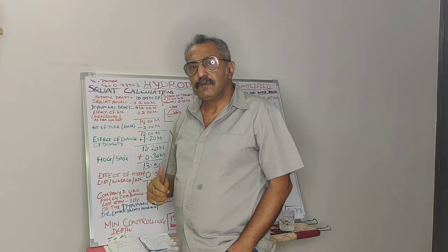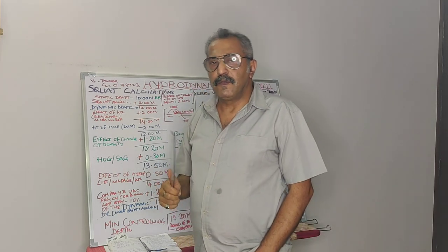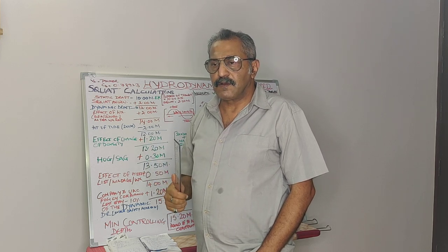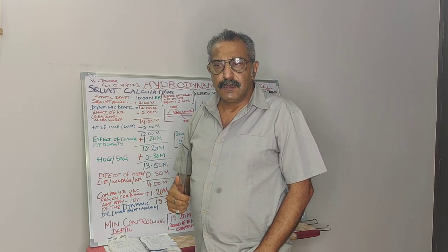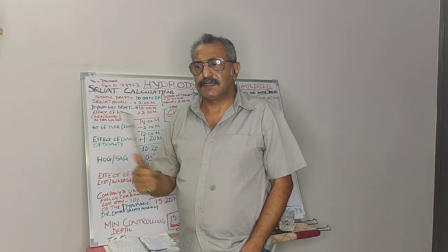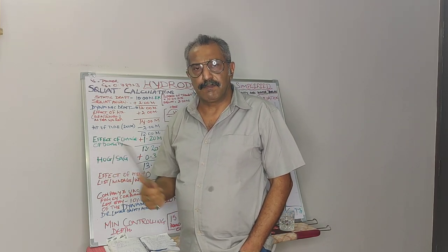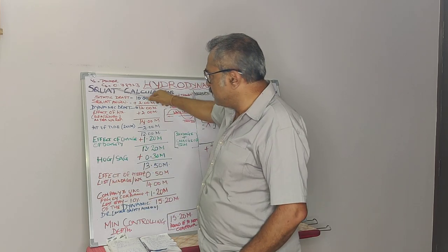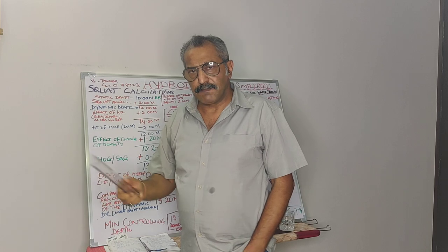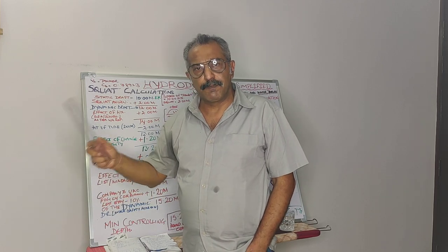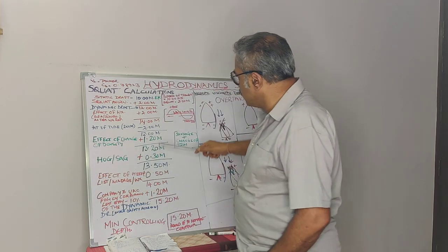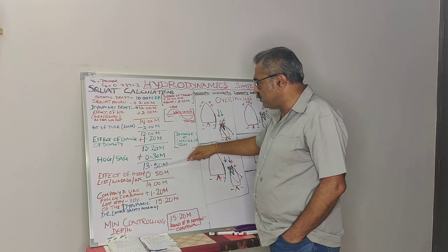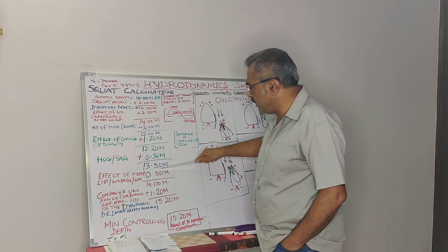The other aspect to take into account is hog and sag. On big vessels — VLCCs and all that — it can go up to 70 or 80 centimeters. On small or medium-sized tankers it may go up to 30 to 35 centimeters. I have taken an example of a medium-sized tanker; the same applies to bigger vessels in the same ratio and proportion. Taking hog and sag as 30 centimeters, that brings us to 13.5 meters.